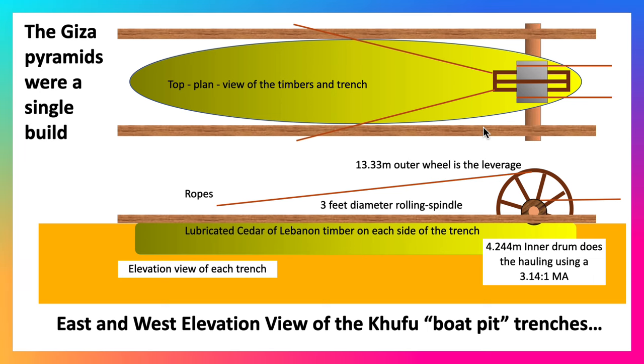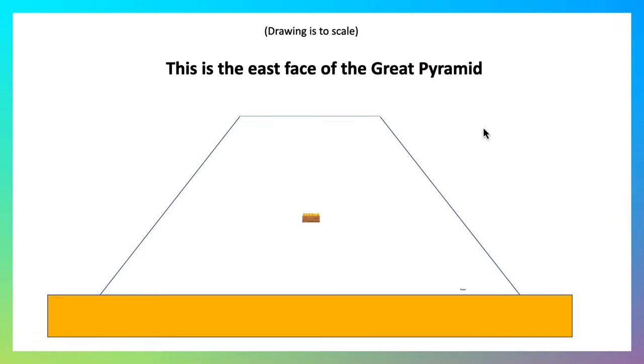This is our building mechanism right here. The drum wheel spindle rotates 14 times along this lubricated timber.